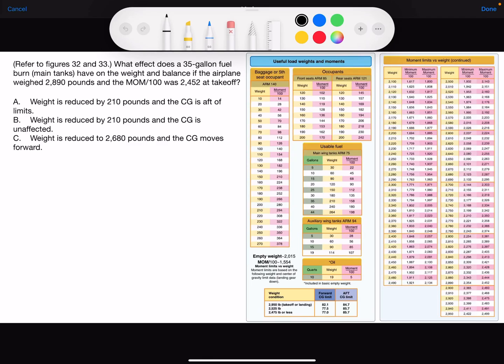Here's a weight and balance question. I refer to figures 32 and 33. What effect does a 35 gallon fuel burn from main tanks have on the weight and on the balance if the airplane weighed 2,890 pounds and the moment in hundreds was 2,452 at takeoff?